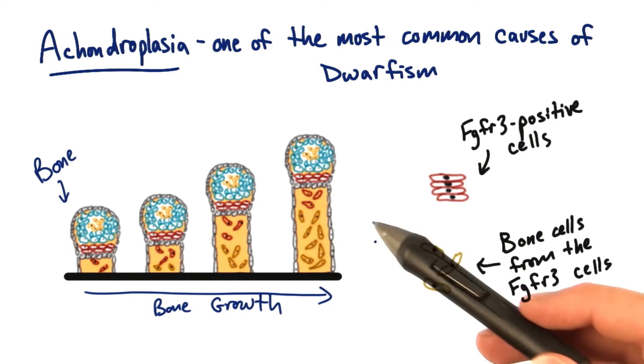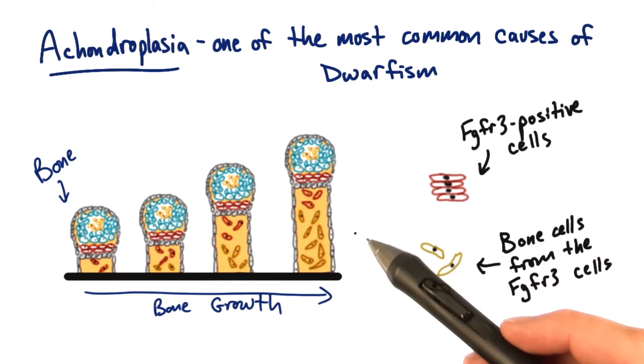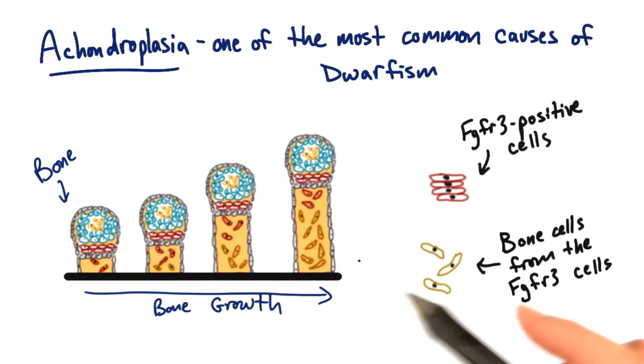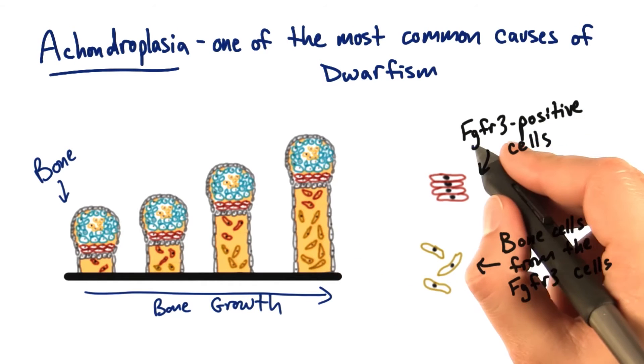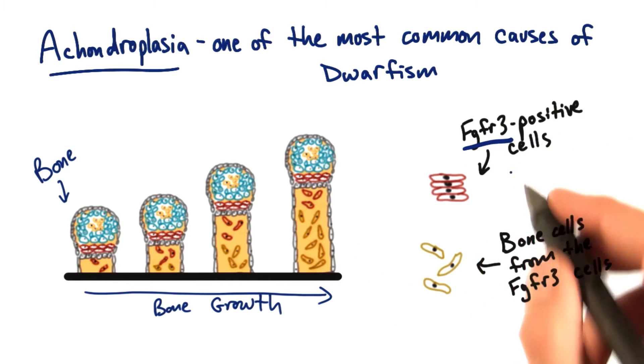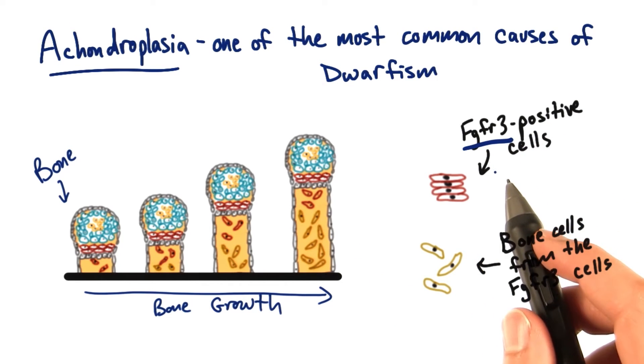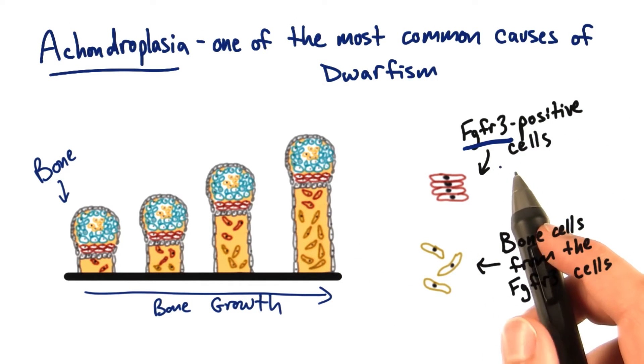How do bones end up a certain length and not shorter or longer? Well, it turns out that the protein FGFR3 is really important in regulating this process.